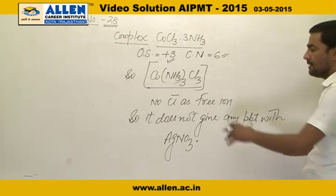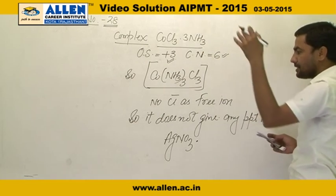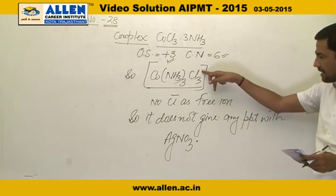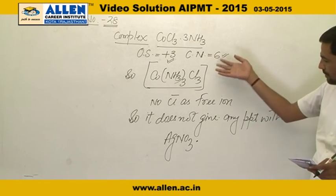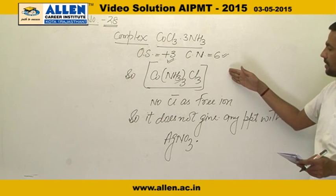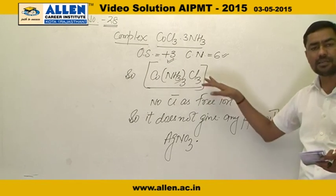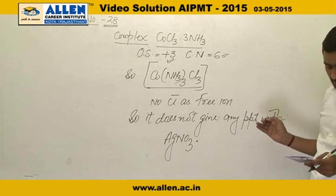Now, any Cl negative ion which is a free ion is not available. So when we add AgNO3, it will not precipitate because the Cl is not a free ion and will not be able to react.